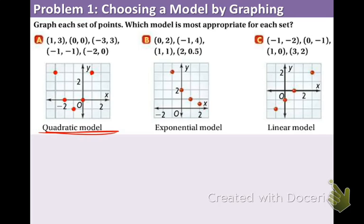In part b we graph the four points and we see that it is not a straight line going down but rather a curve. It's not going down by the same amount each time. So therefore it's not linear. It has to be exponential.